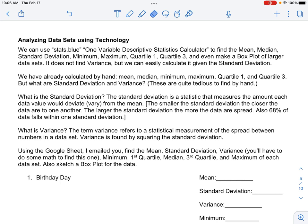So what is standard deviation? The standard deviation is a statistic that measures the amount each data value would deviate, otherwise known as vary from the mean. The smaller the standard deviation, the closer the data are to one another. And then the larger the standard deviation, the more the data points are spread out. Also, if you have something called that normal curve, 68% of data falls in one standard deviation.